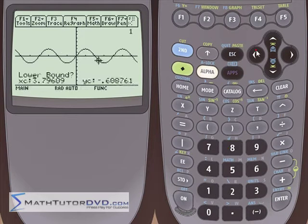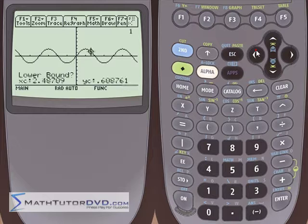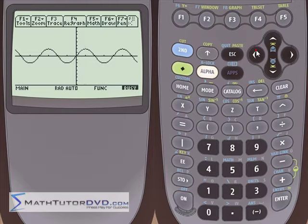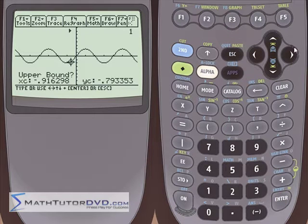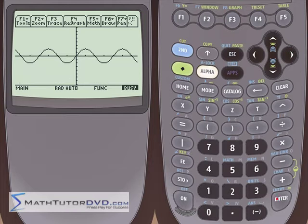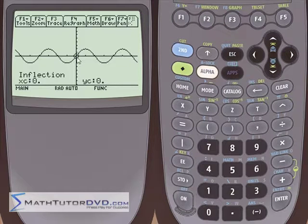Let's do number eight. Let's go find the one over here. The lower bound needs to be a point to the left hand side of the inflection point. Any point we choose, we hit enter. We go on to the other side and hit enter. Find that inflection point. It's going to put 0, 0.